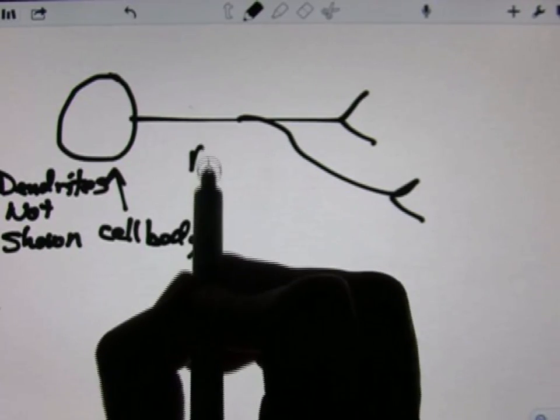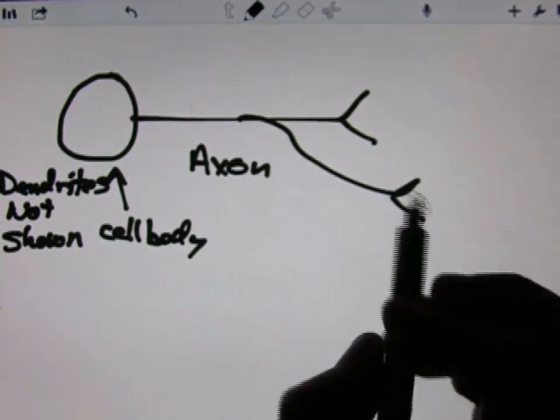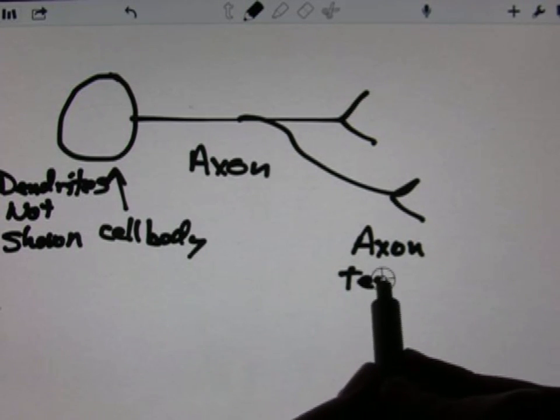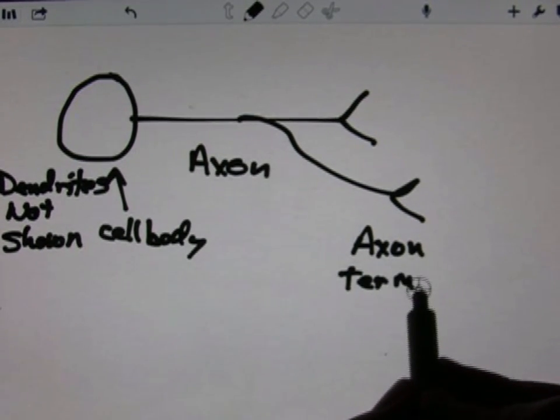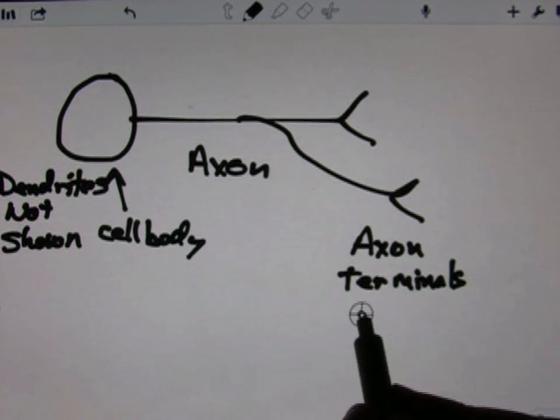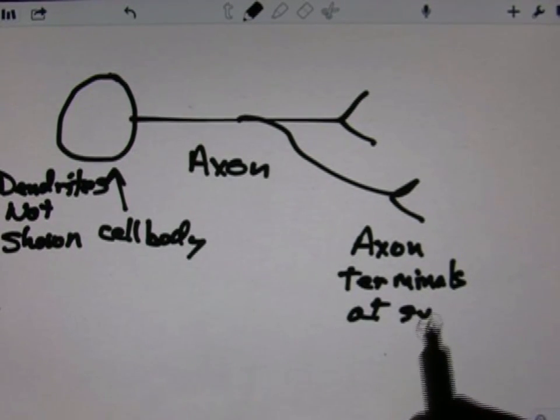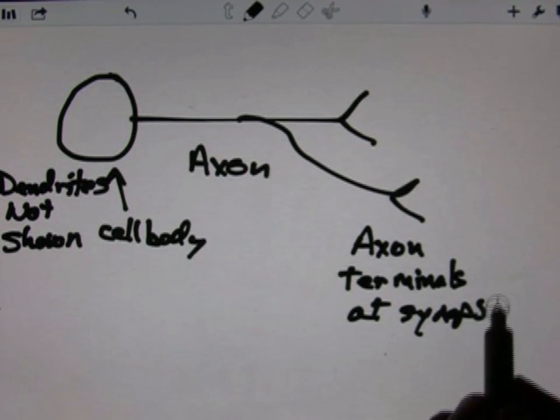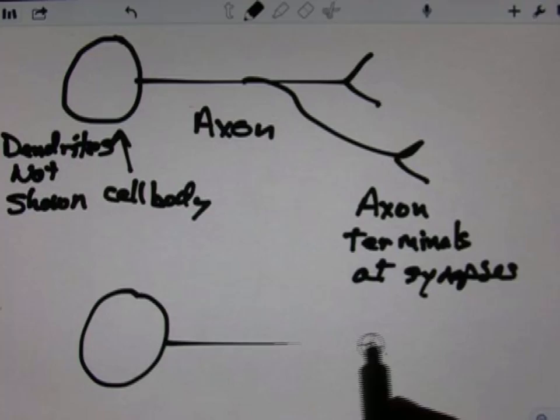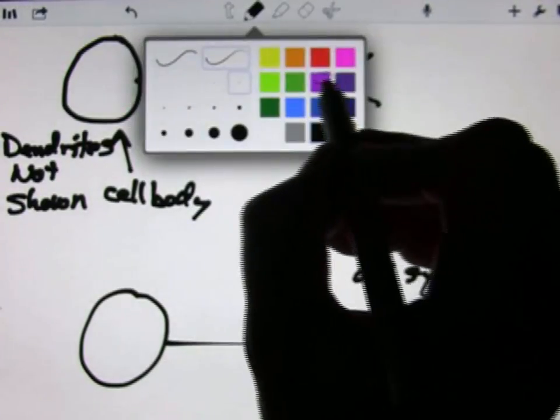And one or more axon terminals from one axon. So we have an axon and axon terminals, in other words, the presynaptic cell at synapses. So when we draw this, we're always talking about the cell and the information.